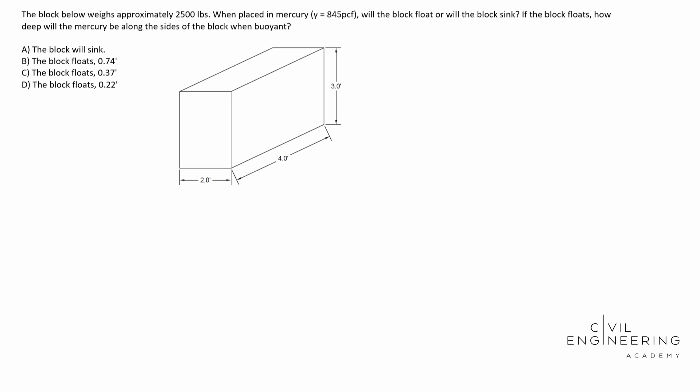So here's what the question says. The block below weighs approximately 2,500 pounds. When placed in mercury, which the gamma is 845 pounds per cubic foot, will the block float or will the block sink? If the block floats, how deep will the mercury be along the sides of the block when buoyant?